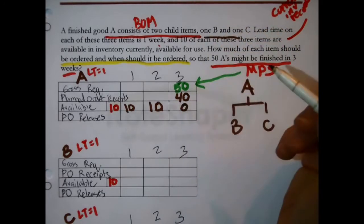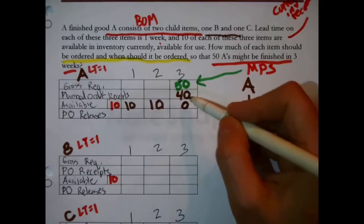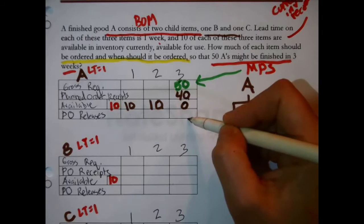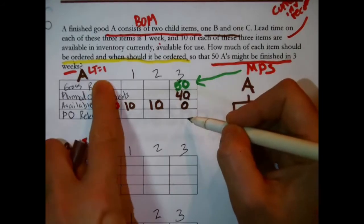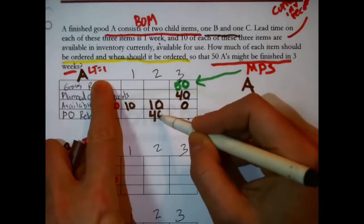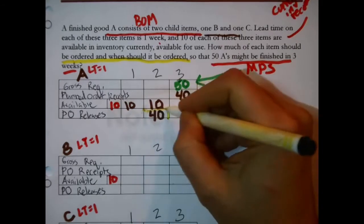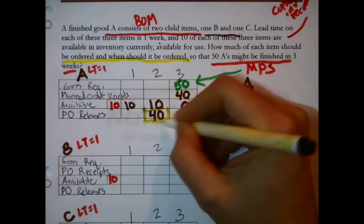The ten plus the forty will make up the fifty and out the door. And that will wipe inventory out to nothing. Now, this is when I need to receive it. To finish the record, drop down to the bottom line. Check the lead time. One week. Count one week forward.